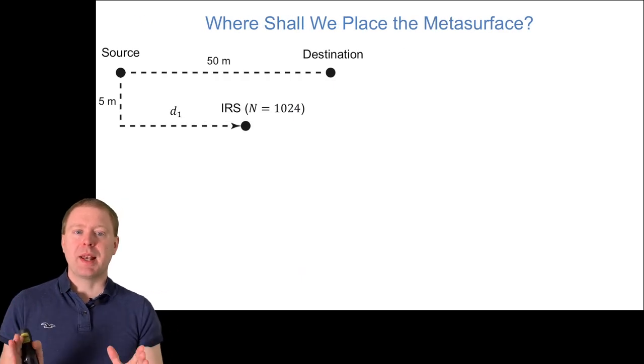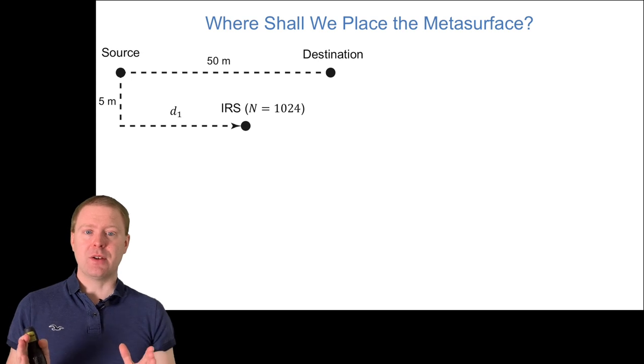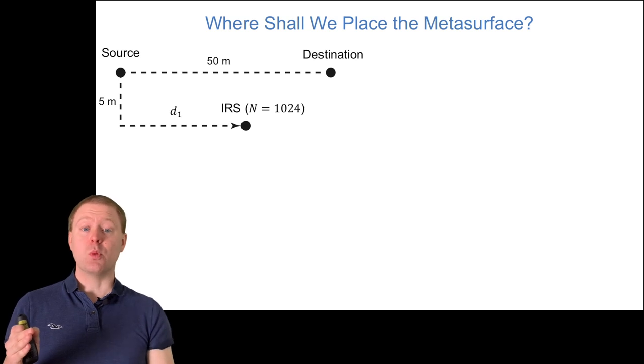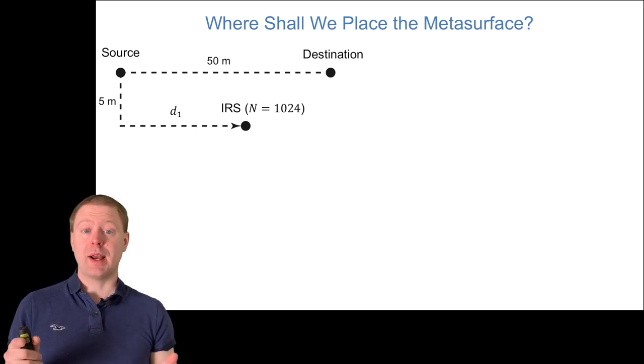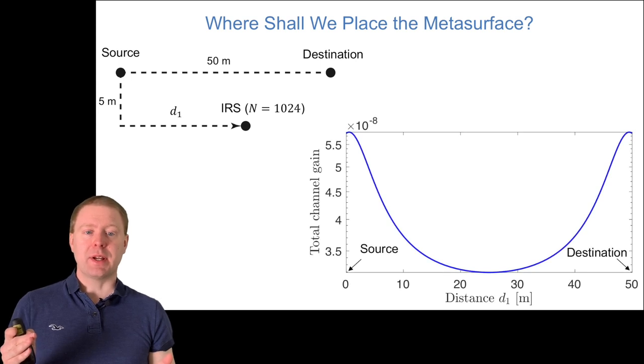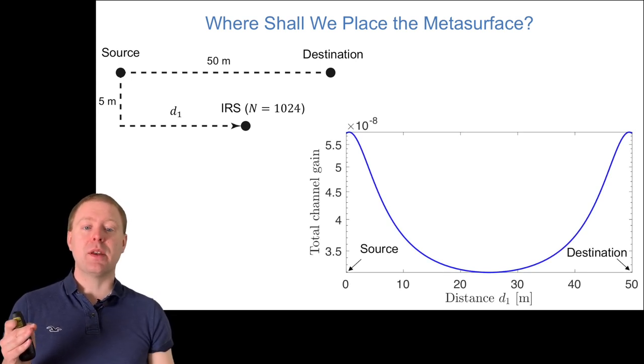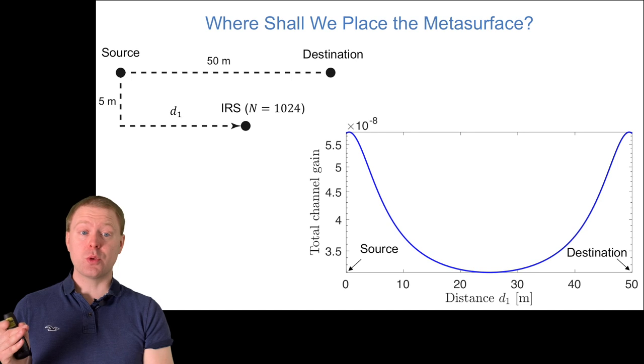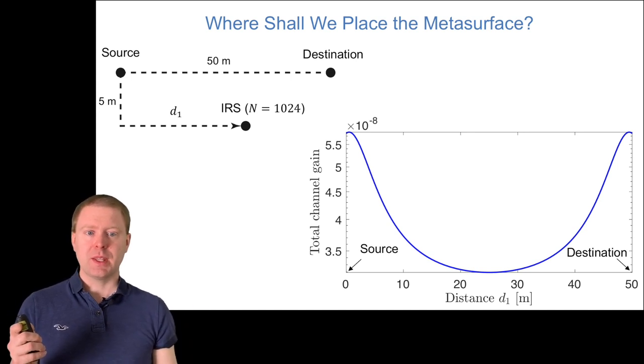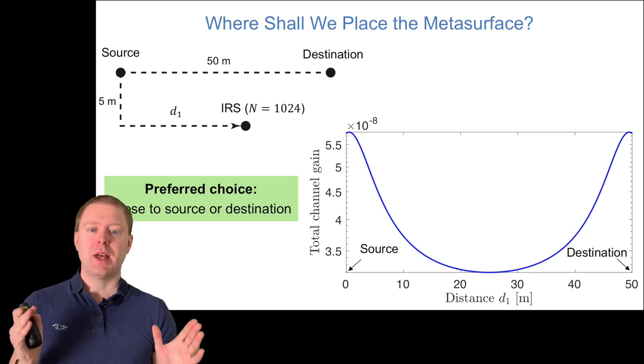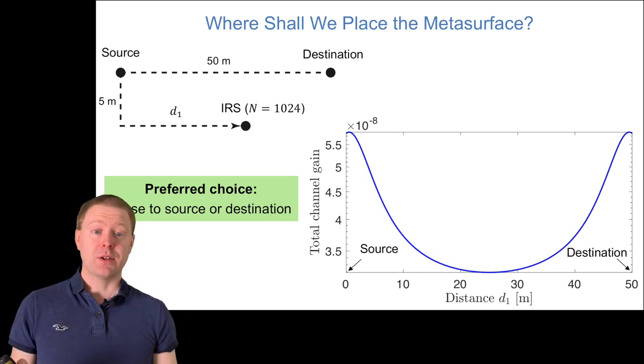Finally, where should we place a metasurface for effective channels? Here we have a source transmitting to a destination 50 meters apart, with an IRS 5 meters below at varying distance d_1. The IRS has 1024 elements. The total channel gain varies with d_1 from zero to 50. We see the best channel gain when close to either the source or destination. That's the preferred choice: put the IRS very close to either the base station or the user.